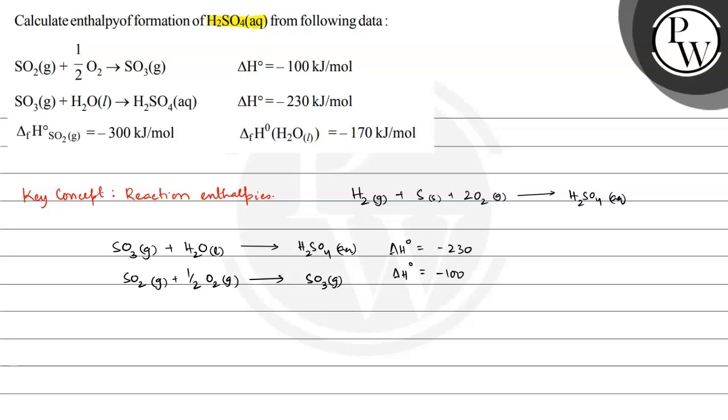And then we need sulfur dioxide and H2O formation enthalpies, which is given here. Delta H formation enthalpy of SO2 gas is equal to minus 300 kJ per mole. The water is also given to us, so we can add the respective equations.